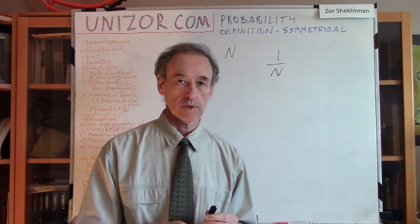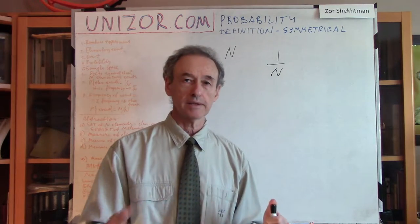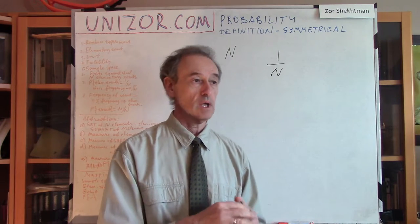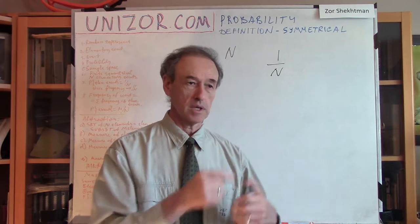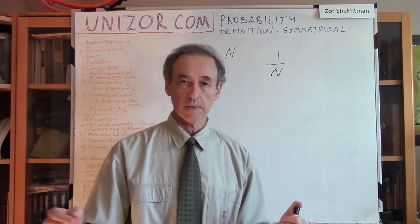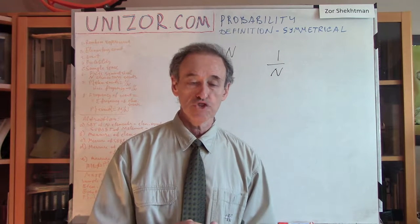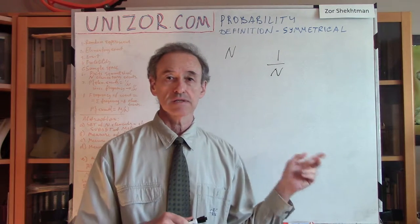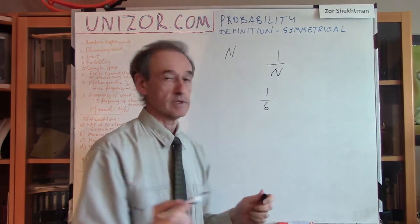I should consider elementary events. Elementary events are those events which cannot be subdivided any further, and in this case we are talking about elementary events which are completely symmetrical. For example, rolling the dice — one particular number on the top, being one, two, three, four, five, or six — these are all elementary events. They're all symmetrical and all have exactly the same chance to occur, so we associate with each of these six elementary events a probability of one sixth.